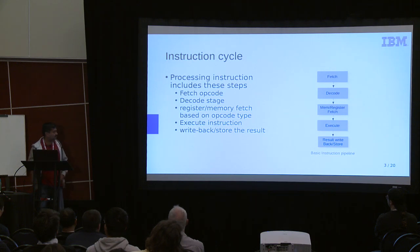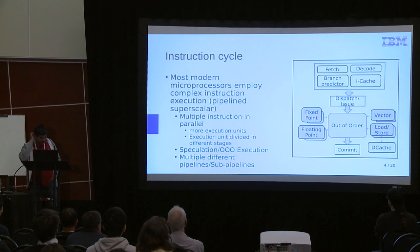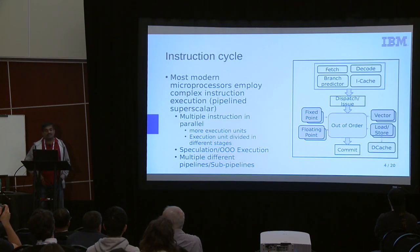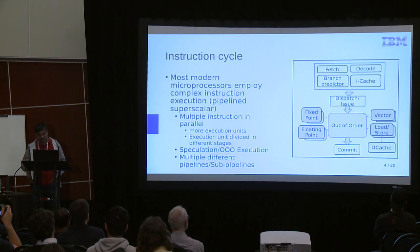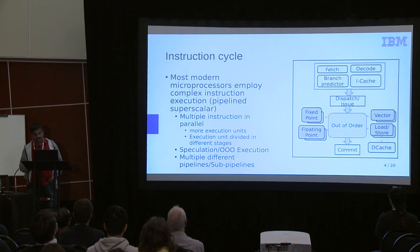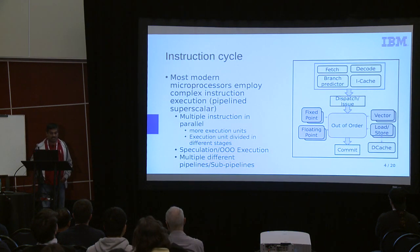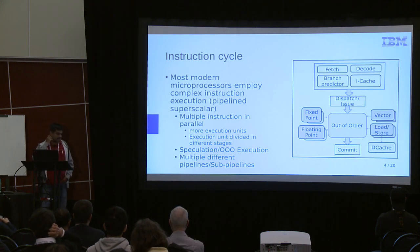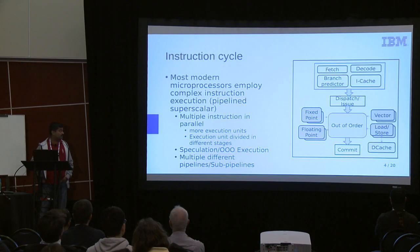Today's processors are much more advanced and sophisticated with superscalar pipelines. They have multiple parallel executions, multiple stages within executions, speculation, and out-of-order execution — all trying to improve instructions per cycle, thereby achieving more throughput with the workload.